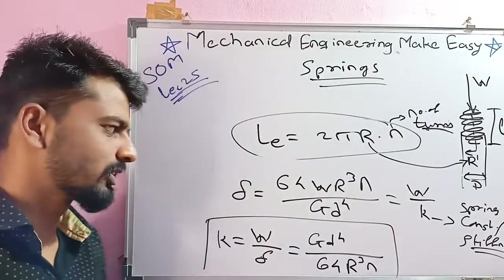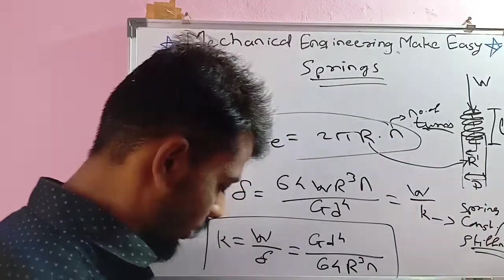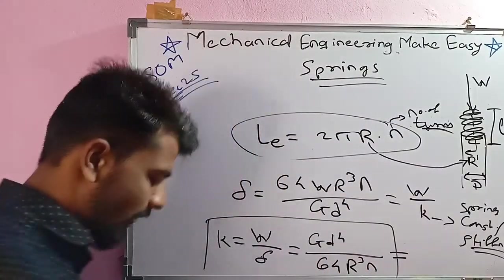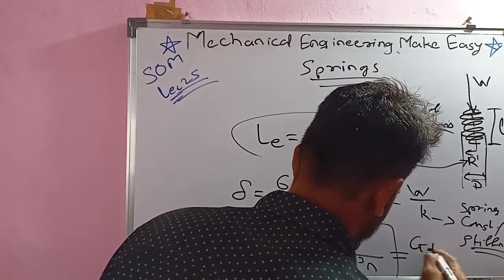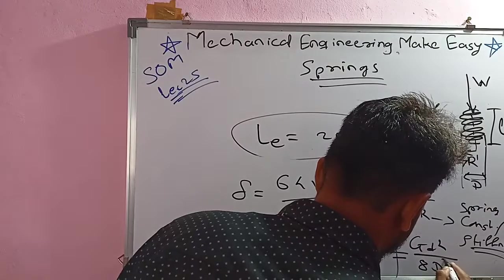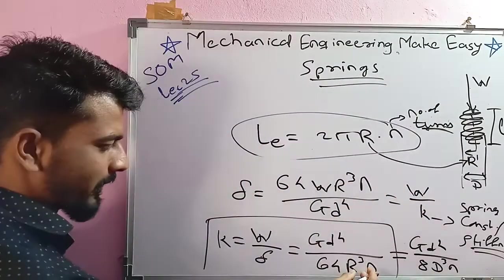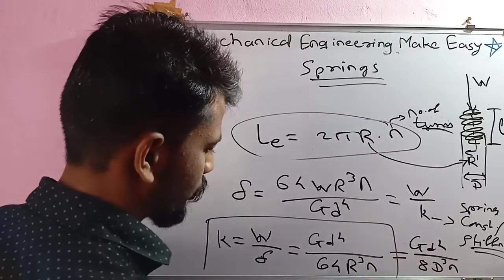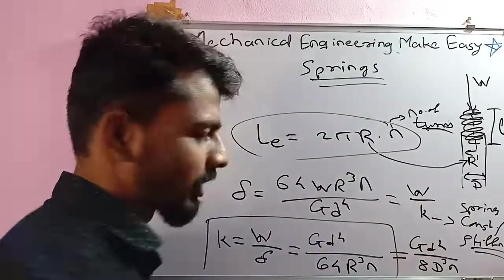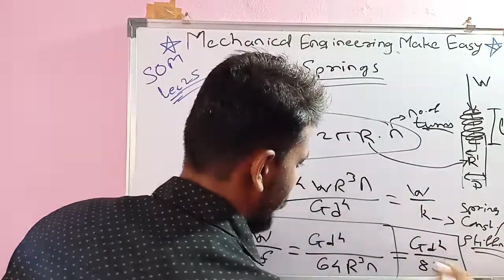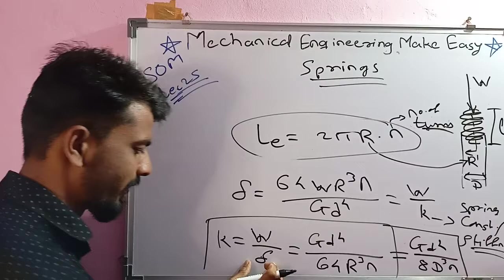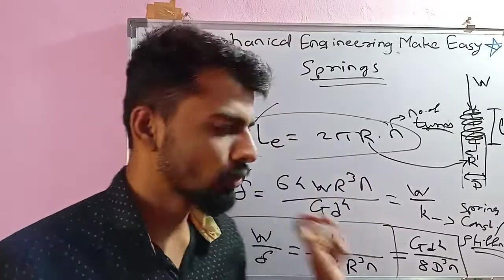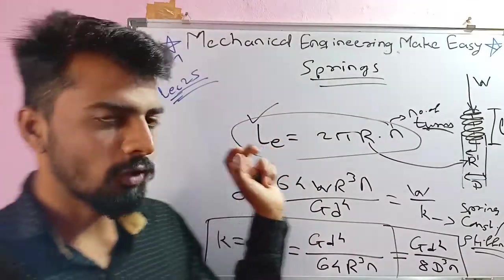We can also express spring stiffness in terms of coil diameter D: k = G d⁴ divided by 8 D³ n, since R = D/2, so 2³ = 8 and 64/8 = 8. Both forms are important — the formula in terms of R and in terms of D. Note down all these formulas.